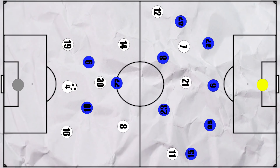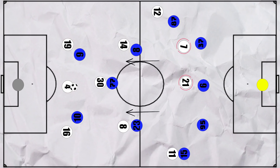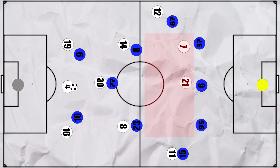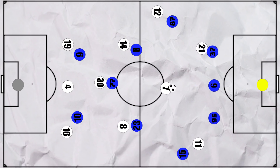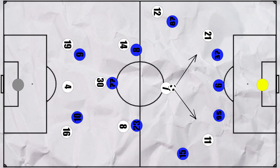Here we come to another problem which Inter faced. When Juventus had the ball in this 3, Inter's forwards and midfielders pressed. But with Juventus forwards staying high, the Inter defenders could not join the press, thus leaving a gap between midfield and defence. Ronaldo often dropped away from his marker, received the ball and could then turn and dribble towards the back four, whilst the other forwards made runs into the wider regions. They repeated this pattern on a few occasions, although no goals came of this.